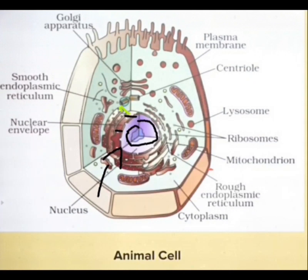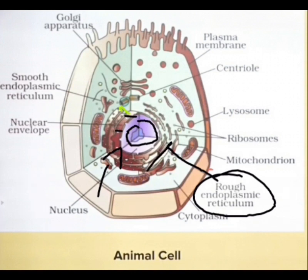Inside the nucleus we have the nucleolus, which is the site of RNA synthesis and ribosome synthesis. The ribosomes will sit on the rough endoplasmic reticulum and help in protein synthesis. The endoplasmic reticulum is of two types: rough and smooth.